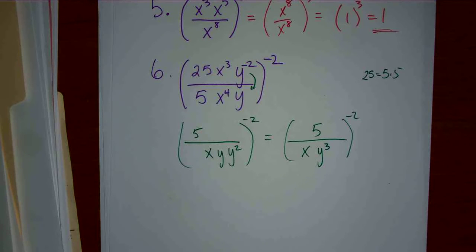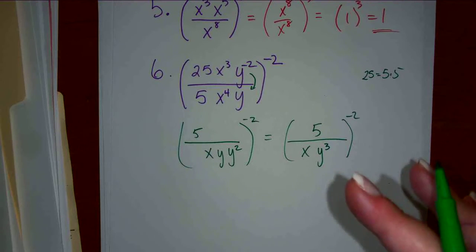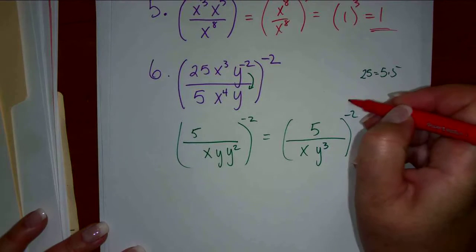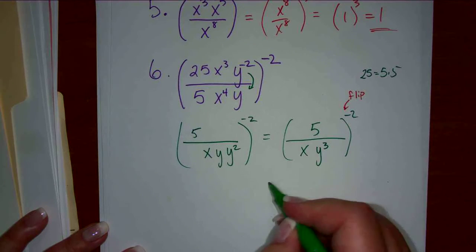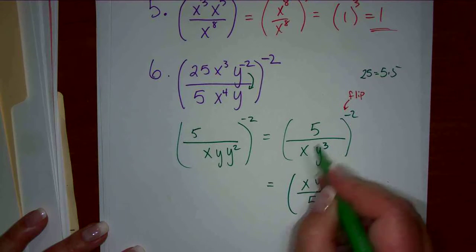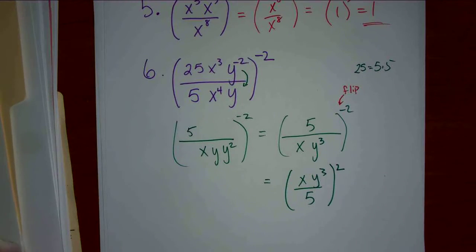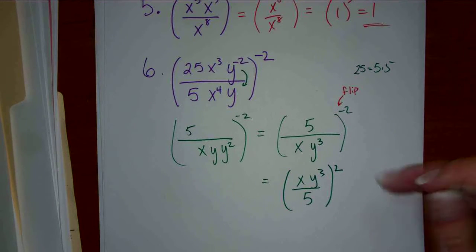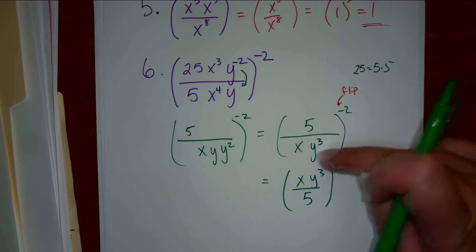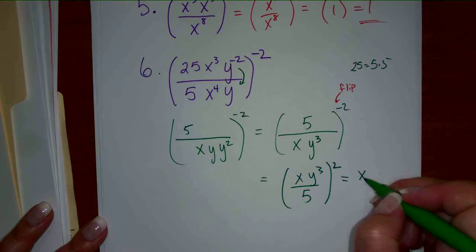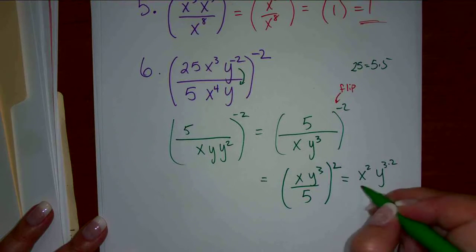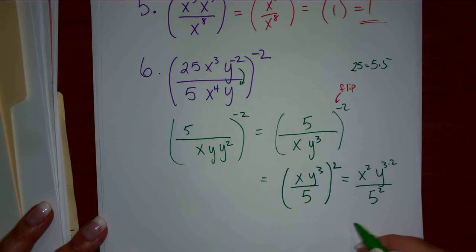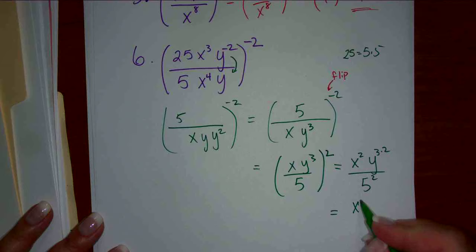Now what does the negative on the exponent outside of the bracket do? Flip. You could apply the negative, but then you're getting more negative exponents, so I would do the flip. What would the flip look like? x y cubed over 5 — I just put everything on the bottom on top and top on bottom — to the 2. Now it changes the sign to positive. And now we apply that square: x squared, y 3 times 2 over 5 squared — x squared, y to the 6 over 25.